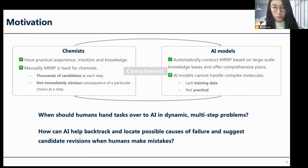When the complexity of the molecules falls within the scope of AI's capabilities, AI is likely to outperform chemists in handling these molecules and can share the workload of the remaining steps on MRRP. However, existing human-AI collaborative work often focuses on single-step problems and provides little guidance on when humans should hand tasks over to AI in such dynamic multi-step problems. Also, there is still limited knowledge on how AI can help backtrack and locate possible causes of failure and suggest candidate revisions when humans make mistakes.